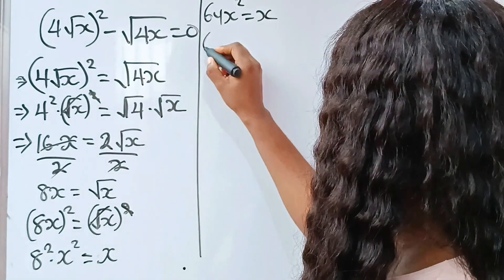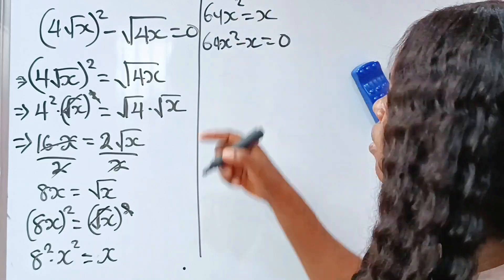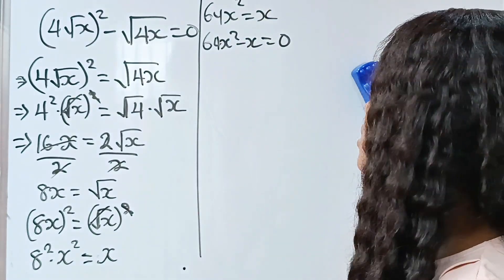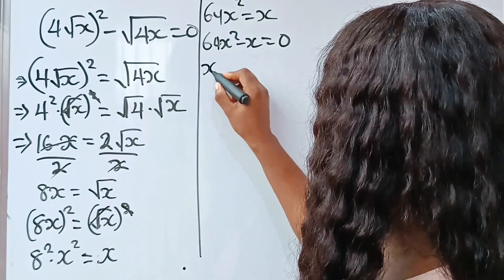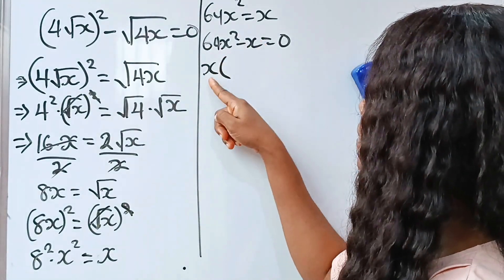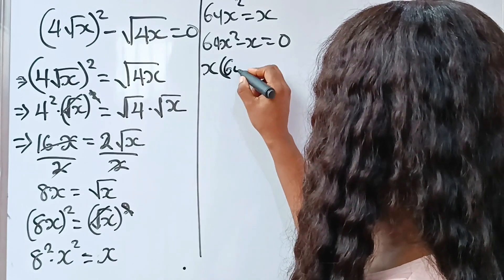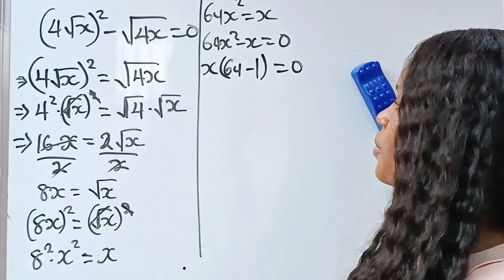Because we just formed the quadratic equation, now plus x we cross to become minus x. Now, at this point, we need to factorize out x since they have x in common. 64x squared divided by x, we give us 64 minus 1 is equal to 0.